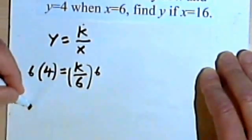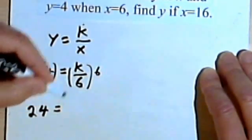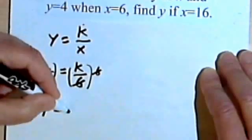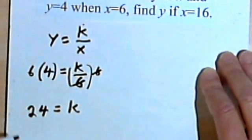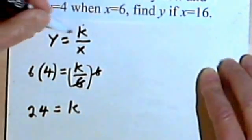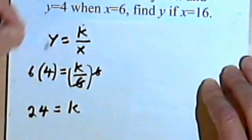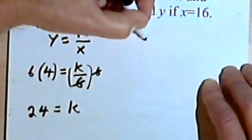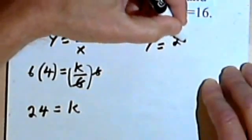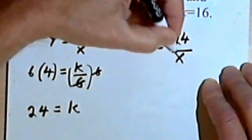And 6 times 4 is 24. The 6 is over here. I'm going to cancel. So my constant, my k, is 24. I'll go back to the general formula and plug in the 24 where I've got a k. So y equals 24 over x.